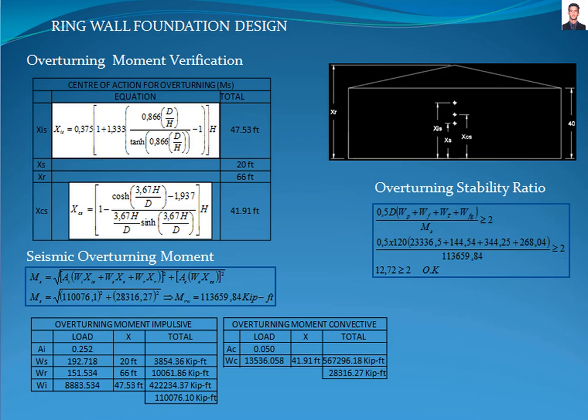The first verification is the overturning verification. To do that, we have to calculate the overturning moment with respect to the slab. The overturning moment NS is calculated with equation 6.1.5N-2 of the American Petroleum Institute 650 standard, where XIS is the height from the bottom tank shell to the center of action of the lateral seismic force related to the impulsive liquid force, calculated with equation E6.1.2.2N-1 for this case.